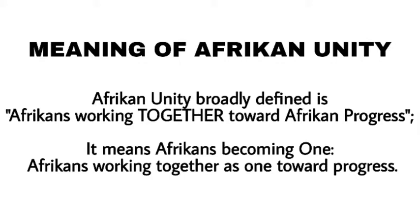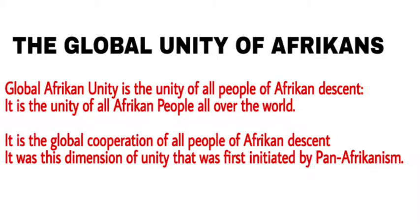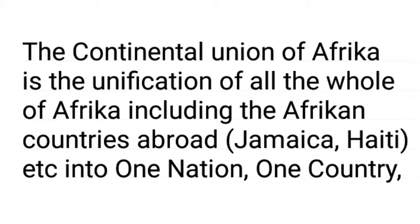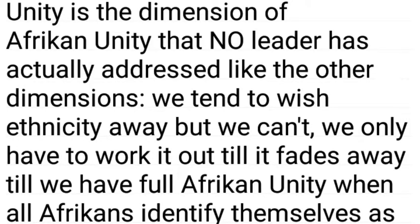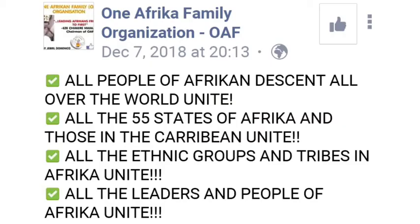African unity is the cooperation of all Africans worldwide. African unity is a deep network of realities. There are four dimensions of African unity: the global unity of Africans, the continental unity of Africa, the ethnic unity of Africans, and the unity between leaders and people of Africa. Pan-Africanism started with the move for the global unity of Africans. The continental unity of Africa is the unification of Africa into one nation. The ethnic unity of Africa is the dimension that no leader has yet adequately addressed. And finally, the people of Africa and the leaders must unite to avoid a revolution.